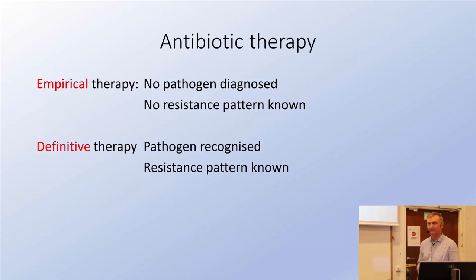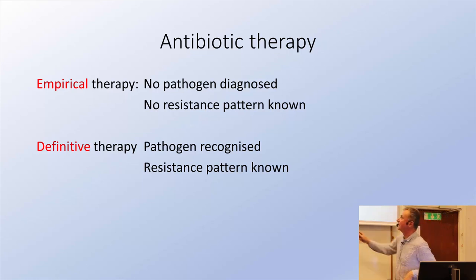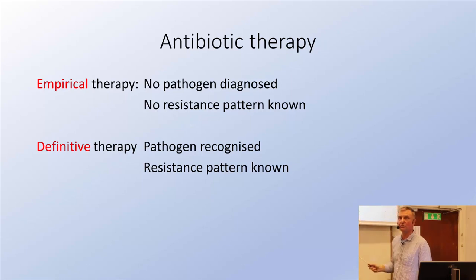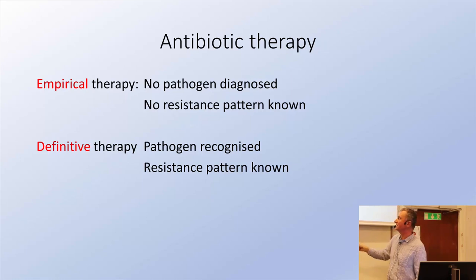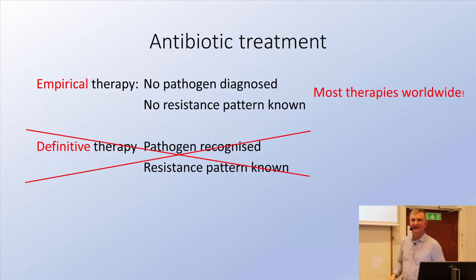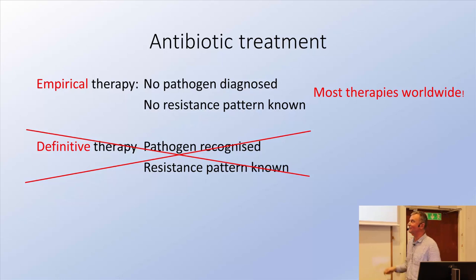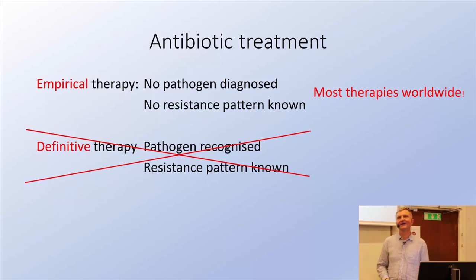This is important — you should be familiar with the concept of empirical therapy and definitive therapy. With empirical antibiotic therapy, we don't know the pathogen diagnosed and we don't know any resistance pattern; we just guess. In some cases we have definitive antibiotic therapy where we do know the pathogen and the resistance pattern. But more than 98% of therapists worldwide are empirical — so doctors largely guess when they prescribe antibiotics.